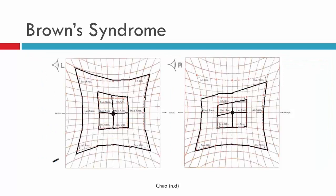Here we have a HES chart of a patient with a right Brown syndrome. We can see the inferior oblique is underacting in both the outer and inner fields. Brown syndrome means the eye isn't elevating in adduction — it's the superior oblique that's the problem, though you won't see that directly on the HES chart. What's characteristic is that in down gaze, the ipsilateral antagonist is unaffected in both fields, and the overaction of the superior rectus is the main other component seen.